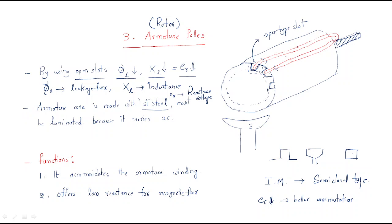The armature core is made with silicon steel and must be laminated. The silicon steel must consist of laminations because it carries AC quantities. The most important thing is that although it is in a DC machine, it produces AC quantities — that is why laminations are required. In the case of field pole cores, there are no laminations, but the armature core has laminations because it carries AC.